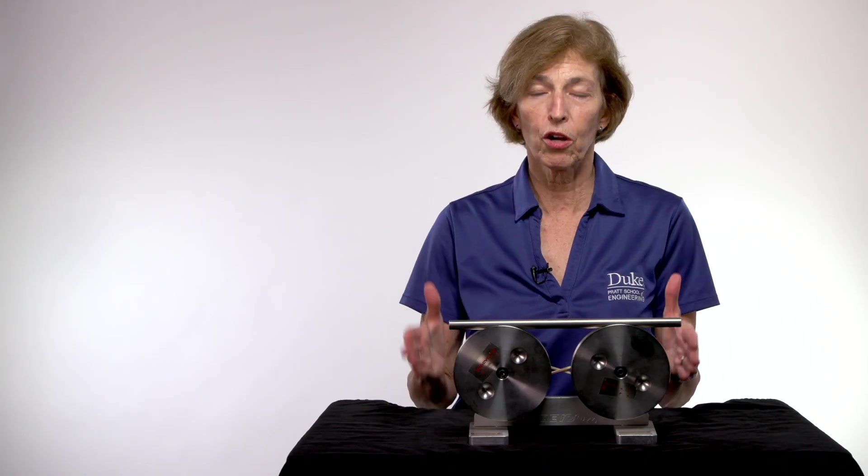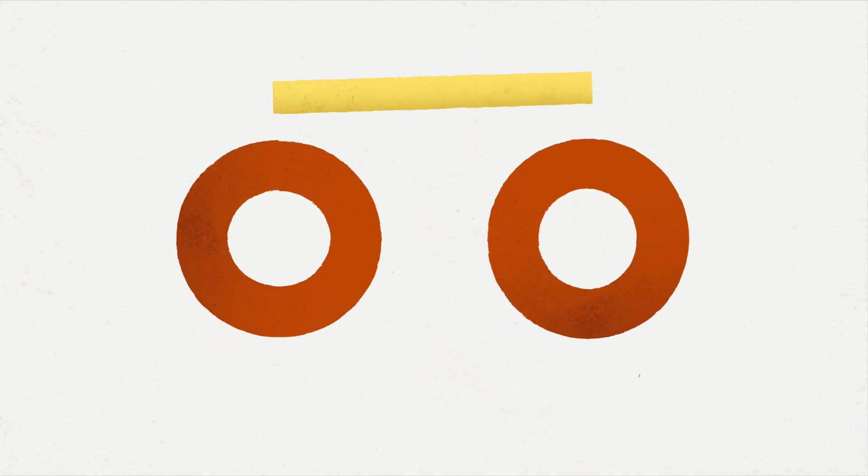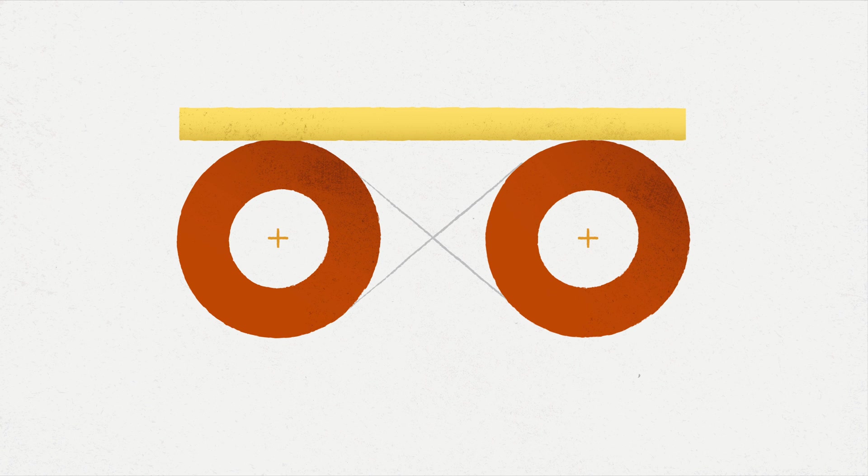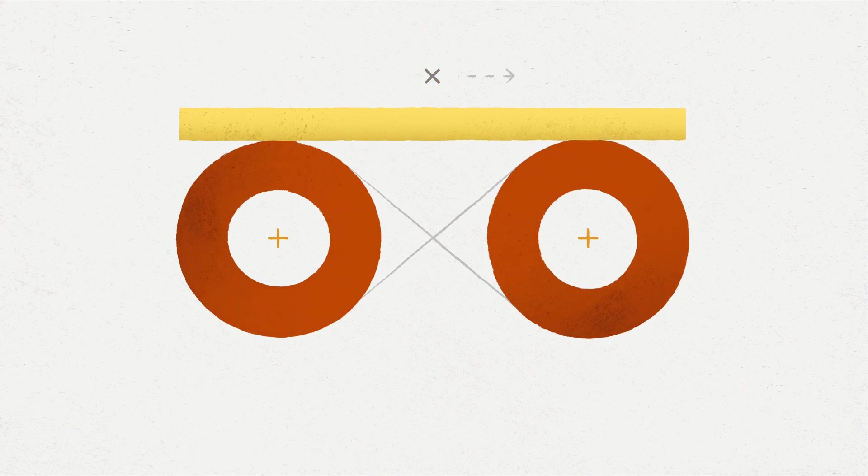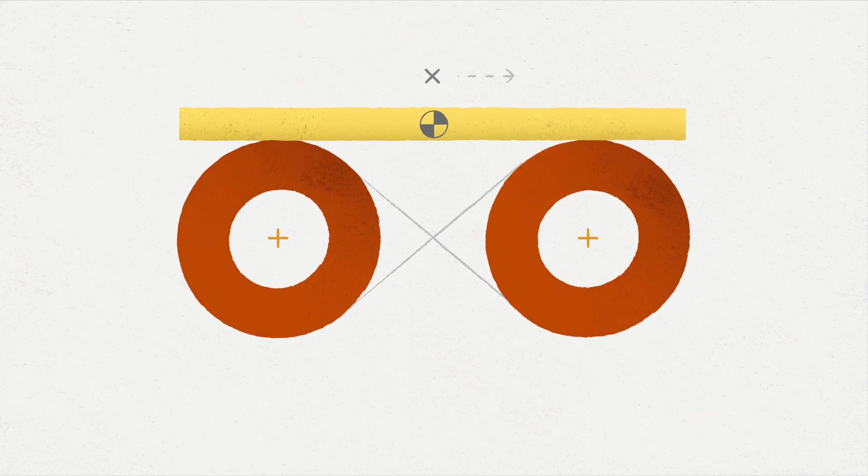The first thing we would do is start with a sketch. So we sketch the system, and we would have the bar and the wheels, and we would define a coordinate system where x is going to be the motion of the bar. So we'll say x is the location of the center of mass of the bar.